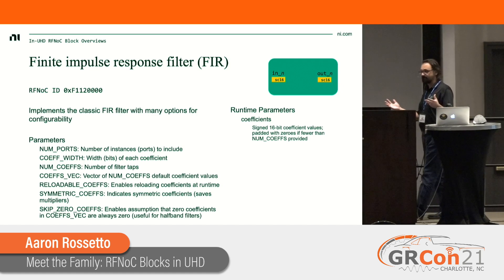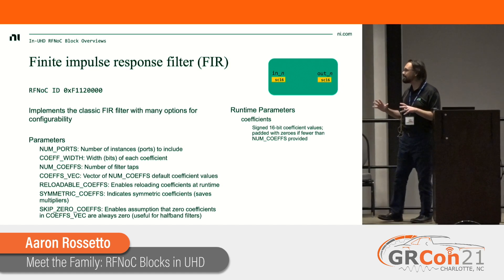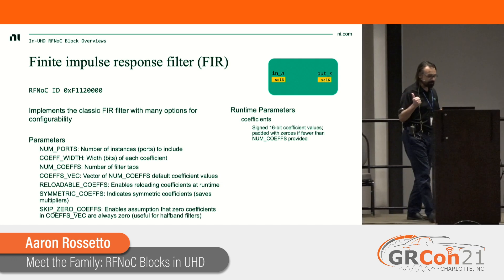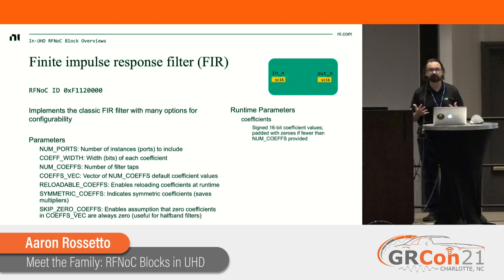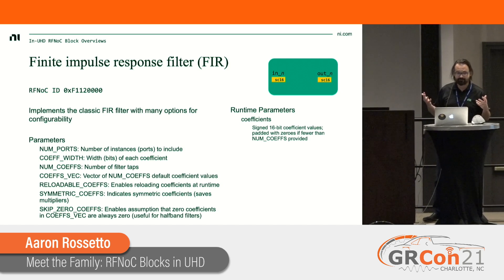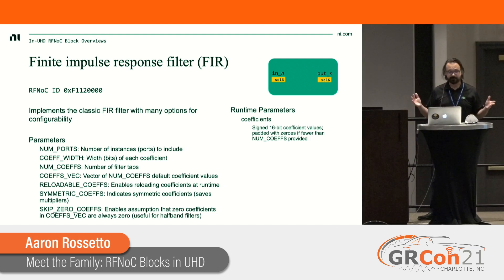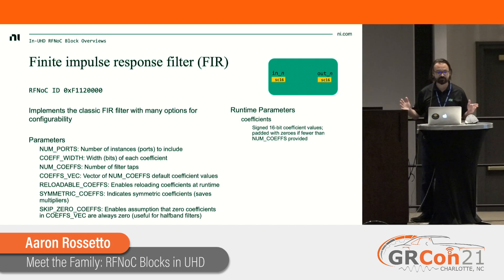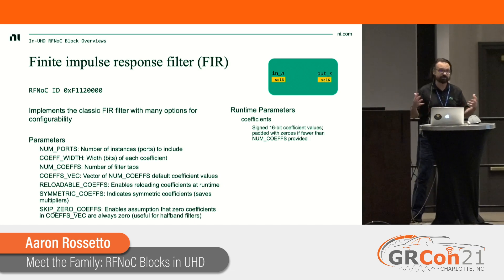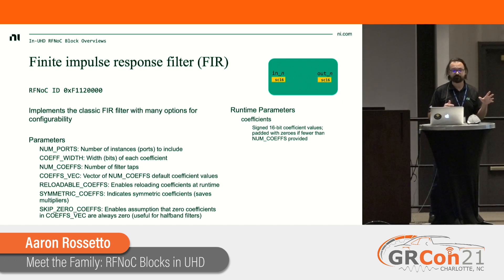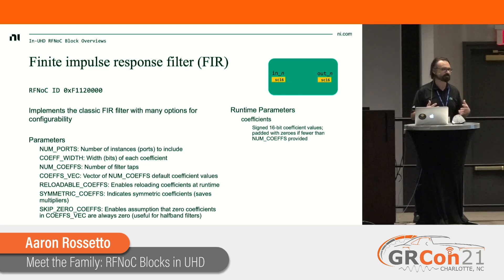The classic FIR block is extraordinarily configurable. The parameters let you trade off behavior against FPGA resource usage. If you don't need to reload coefficients at runtime, you can disable reloadable coefficients to save registers. If you have symmetric coefficients, you can save multipliers by enabling that option. The skip-zero-coefficients option assumes zero coefficients will never change, useful for half-band filters. Coefficients can be changed at runtime if reloadable coefficients is enabled, which is true by default.